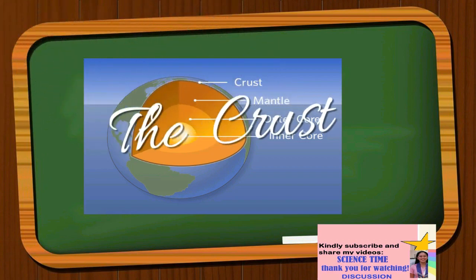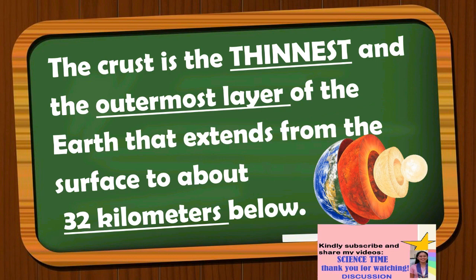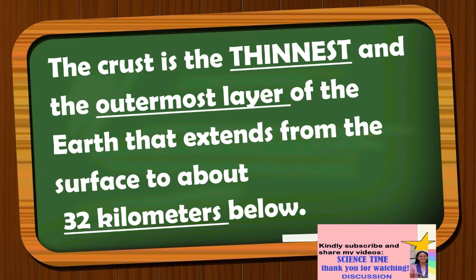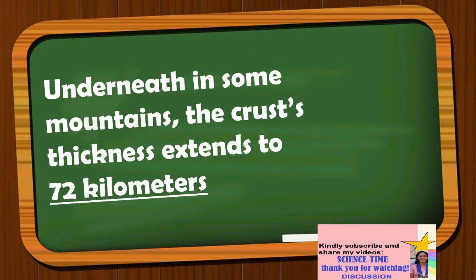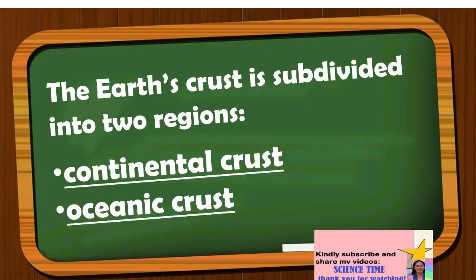The crust is the thinnest and the outermost layer of the Earth, extending from the surface to about 32 kilometers below. Underneath some mountains, the crust thickness extends to 72 kilometers. The Earth's crust is subdivided into two regions: the continental crust and the oceanic crust.